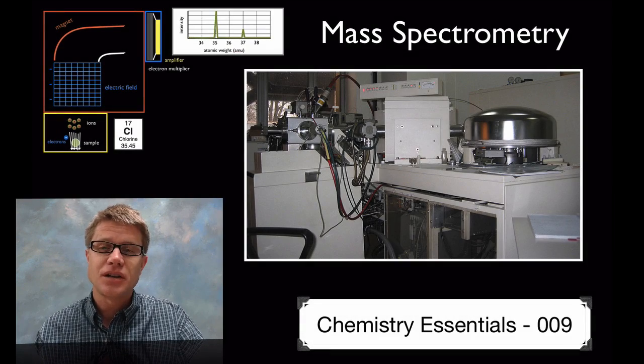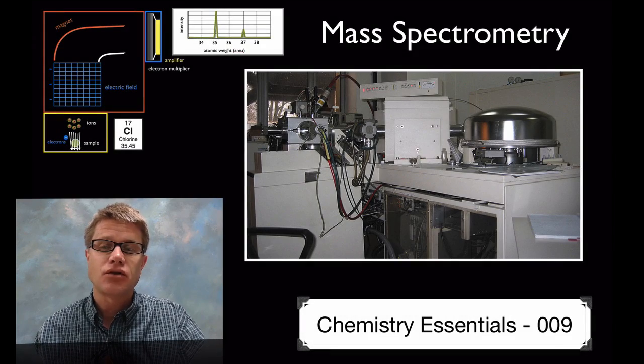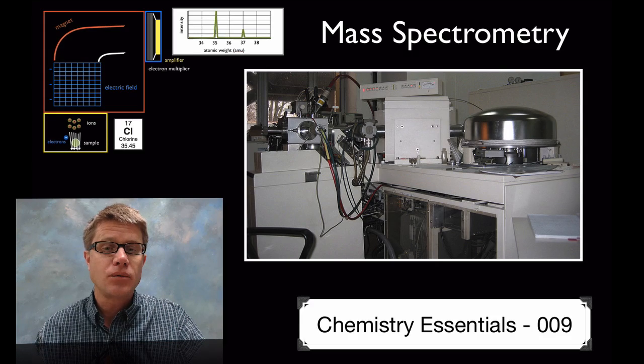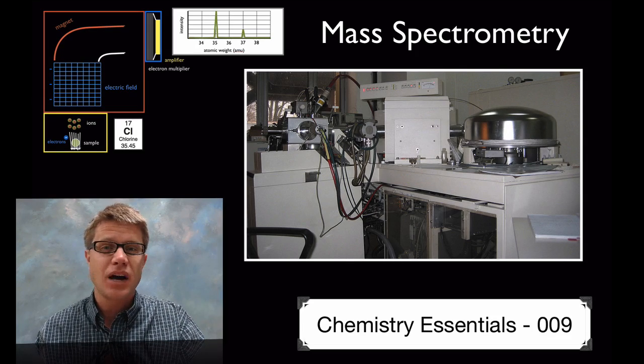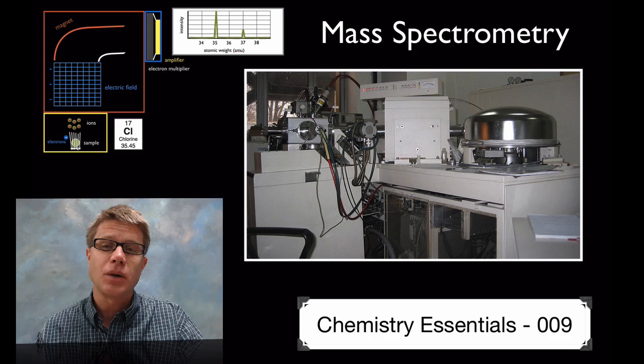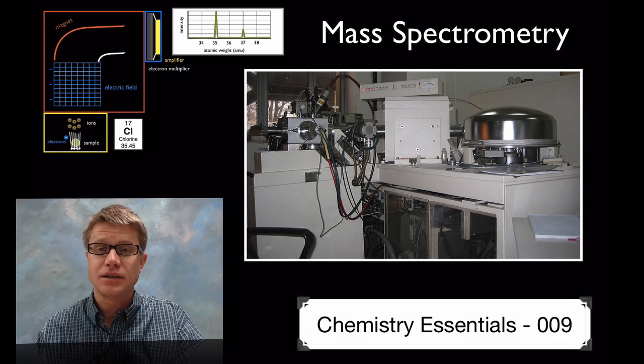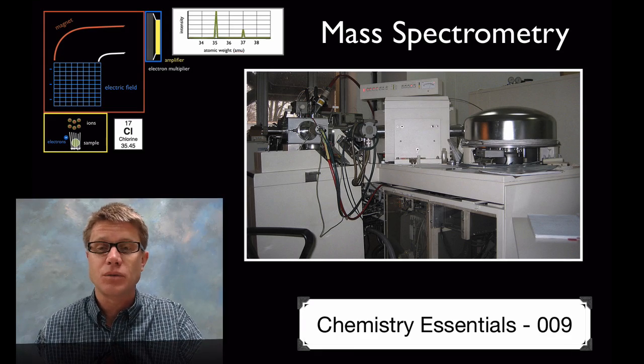Hi, it's Mr. Andersen and this is Chemistry Essentials video 9 on mass spectrometry, which is a way that we can separate atoms, isotopes, even fragments of molecules based on their mass. It's an incredibly effective machine.